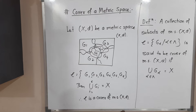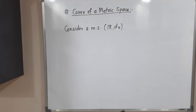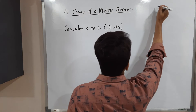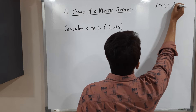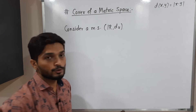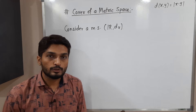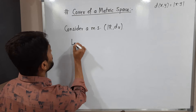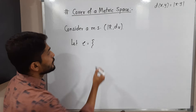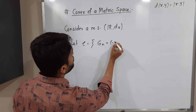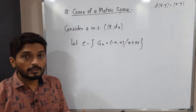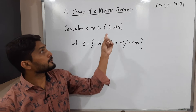Let us discuss one example so you can clearly understand this concept. I am going to consider a metric space R, D_U — the usual metric D_U, defined as D(x, y) = |x − y|. We have already seen what the usual metric is in previous videos. I am considering a collection of subsets of R: G_n = (−N, N), where N belongs to the set of natural numbers.